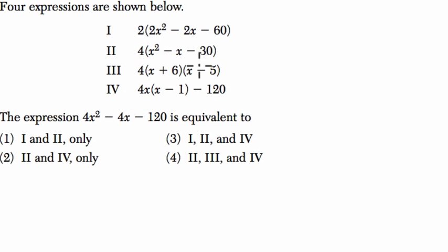So all I'm going to do is work backwards and see which of these actually equal 4x² - 4x - 120. The first one, we distribute with 2. 2 times 2x² is 4x². 2 times -2x is -4x. And 2 times -60 is -120. Okay, so that's equivalent. So 1 is definitely one of the answers.